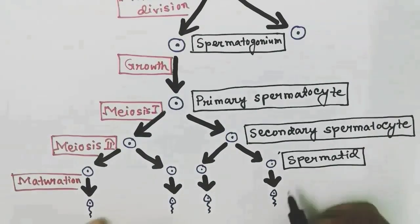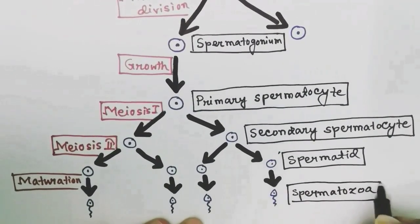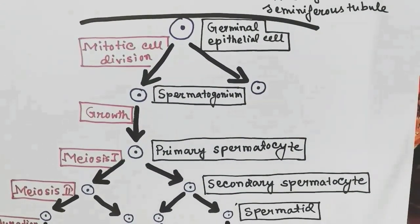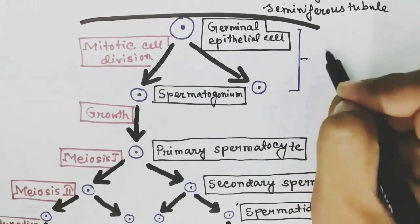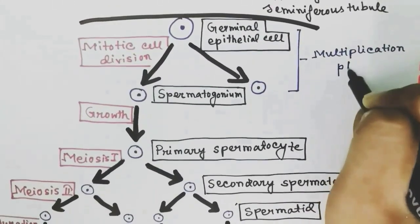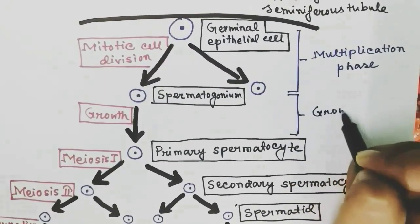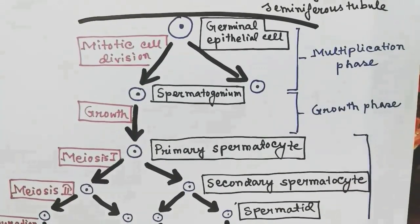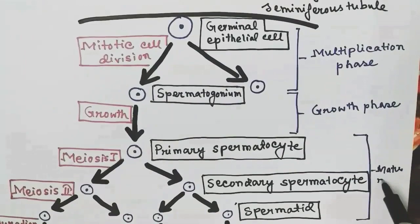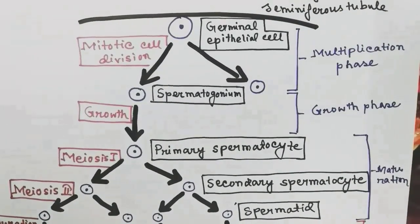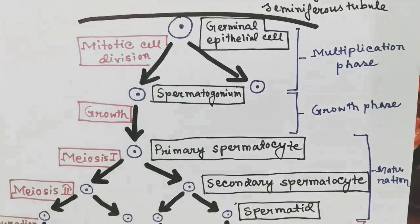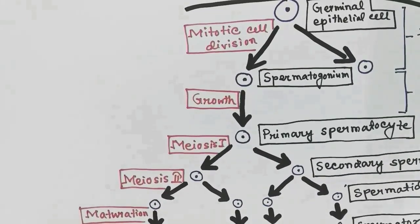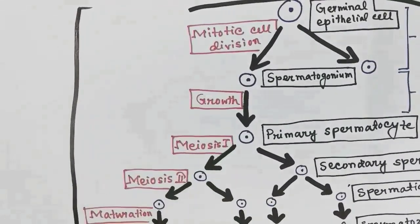From the germinal epithelial cell to spermatogonium by mitotic cell division, this phase is called the multiplication phase. From spermatogonium to primary spermatocyte is the growth phase. From primary spermatocyte to spermatid — the whole meiosis process — is the maturation phase. The formation of spermatozoa from spermatid is called spermiogenesis, and the entire process from germinal epithelial cell to sperm production is called spermatogenesis.